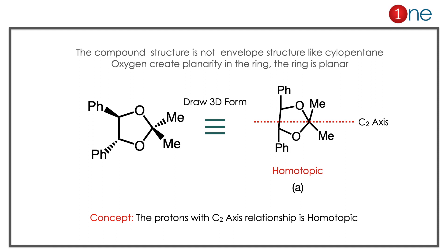Let us draw in the 3-dimensional form. It is a 5-membered ring. It won't have an envelope shape because of the oxygen atom, so the bond angle will not be tetrahedral — it will be a planar structure. With 1 phenyl above, 1 phenyl below, 1 methyl above, 1 methyl below, the methyl groups have a C2 axis relationship. If the relationship is C2, it is homotopic. So the methyl groups are homotopic. The concept: if a cyclic ring has a heteroatom, it will be mostly planar; C2 relationship means homotopicity.